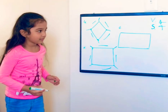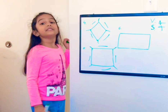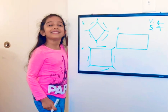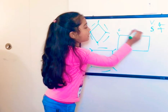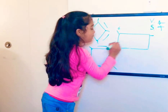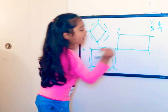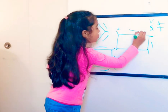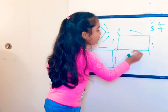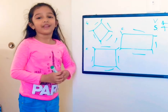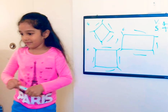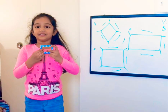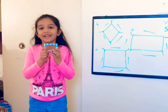Next is rectangle. Let's count the rectangle's vertices and sides. One, two, three, four — it has four vertices. And one, two, three, four — it has four sides. This toy is the same shape as a rectangle.